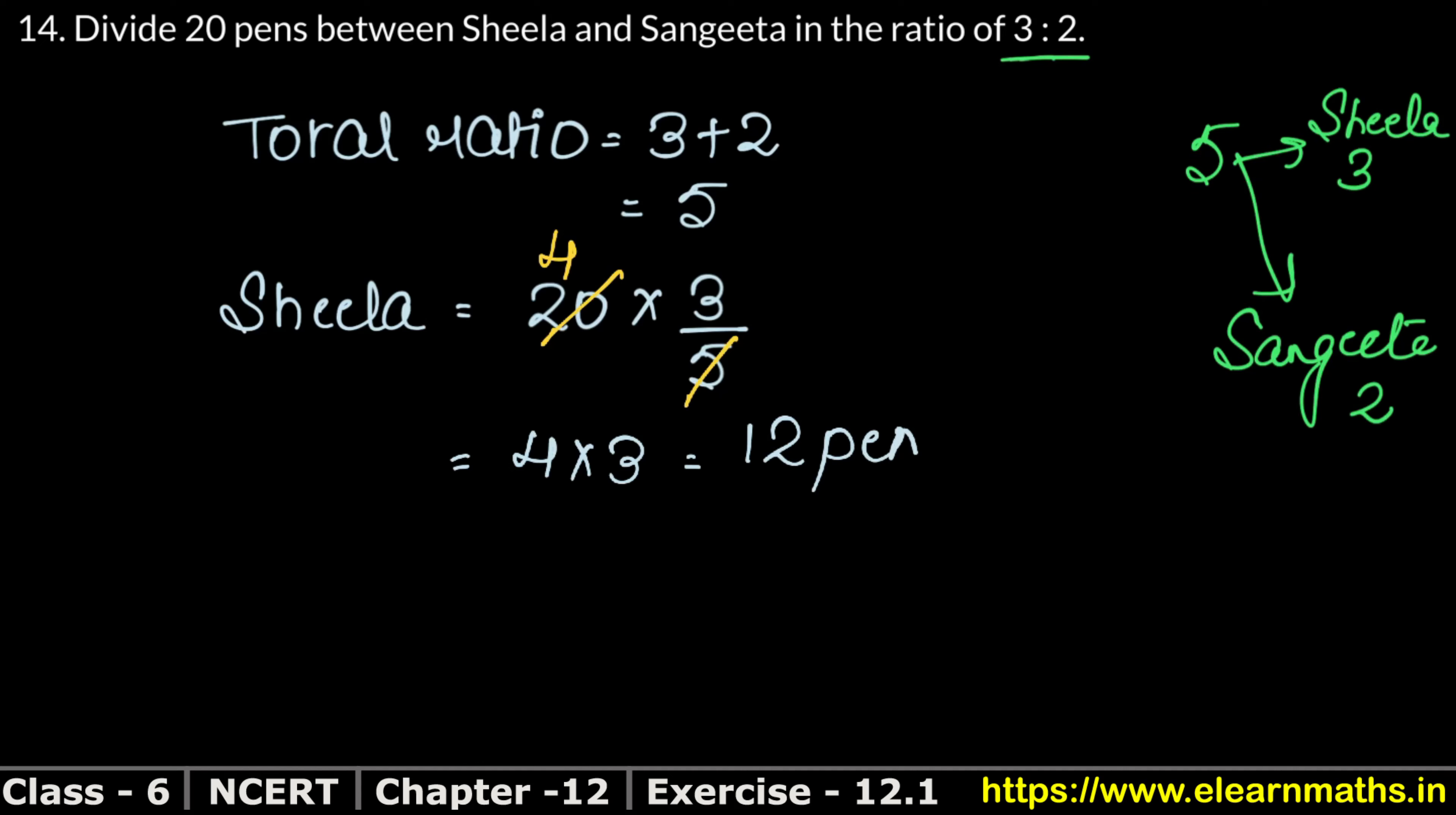Now we take Sangeeta's ratio the same way. Total was 20 into Sangeeta's proportion - her ratio is 2, total ratio was 5. This equals 4 into 2, which is 8. So when we divide 20 pens, Sheela gets 12 pens and Sangeeta gets 8 pens, which is 3:2. If you take the ratio and reduce it, you'll get this ratio. This is our answer.